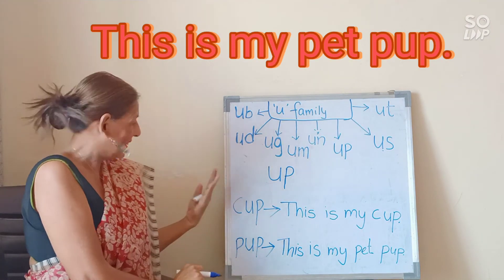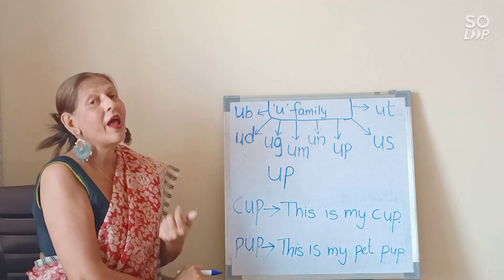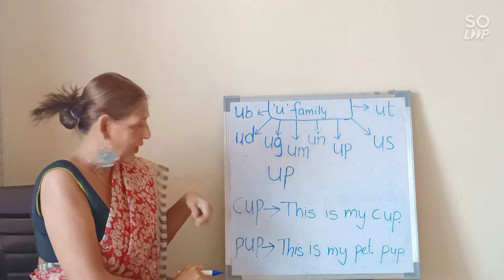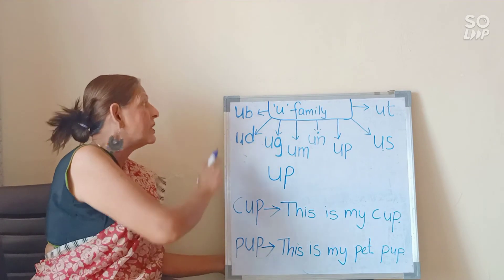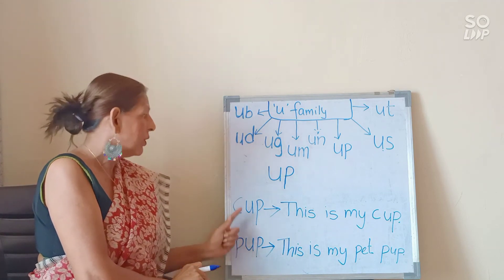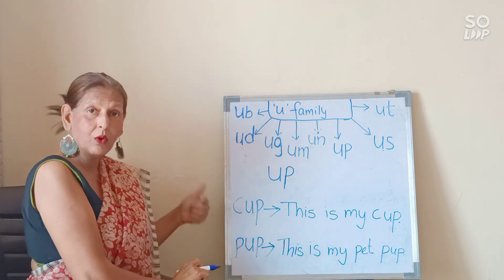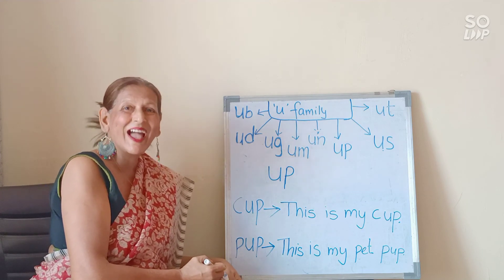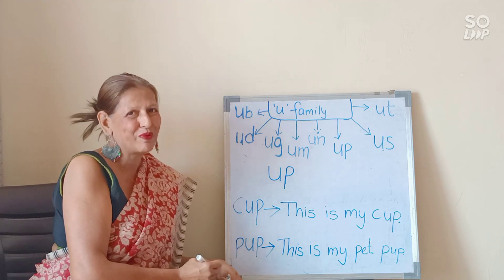We can also say 'I have a pup as a pet' or 'I have a pet pup.' My pup's name is Moti. So this is the lesson for today, my dear children, with the U vowel and the CVC words, with a meaningful sentence for each of the words. I will see you again in my next class. Until then, be home, be safe and subscribe to my channel.